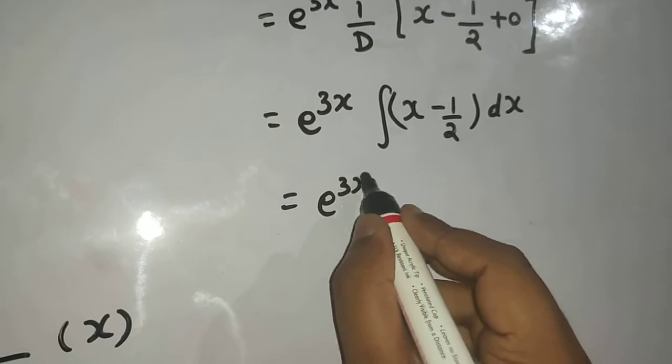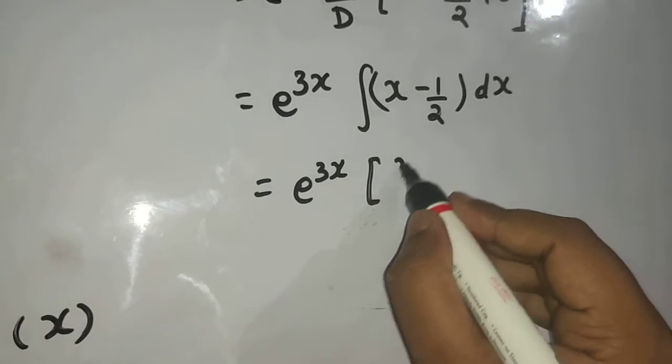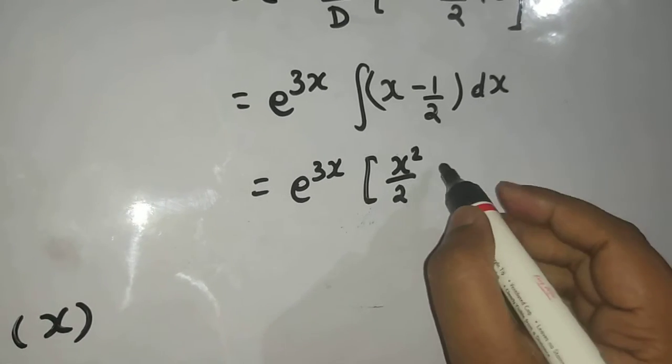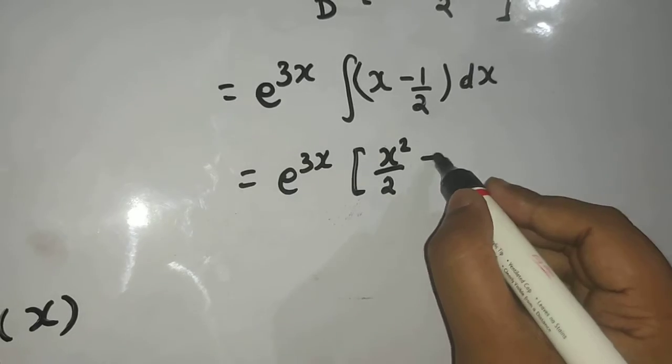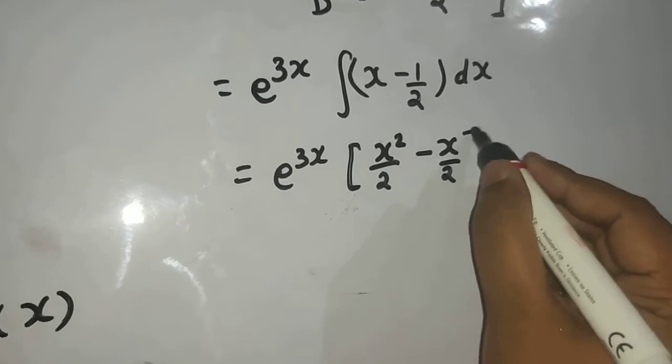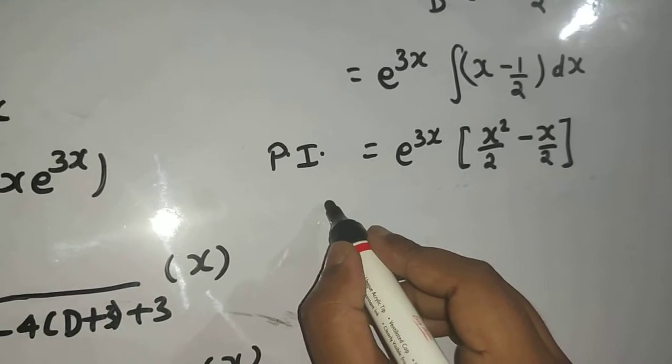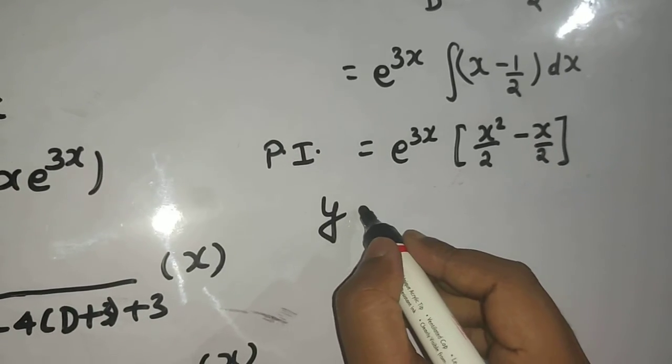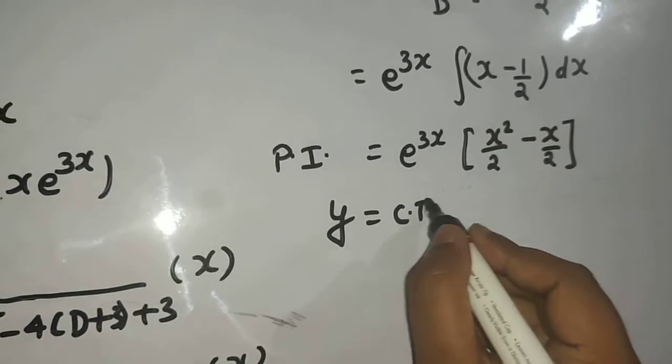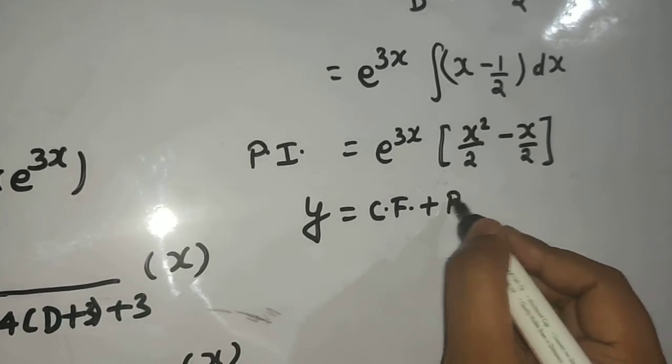So this is e power 3x, integral of x is x square by 2, that of minus half is minus x by 2. So this is your particular integral.